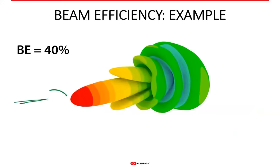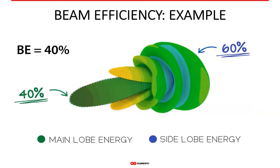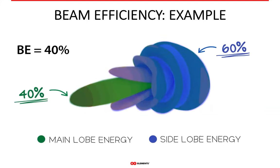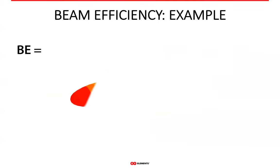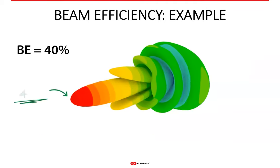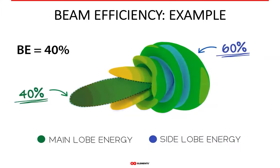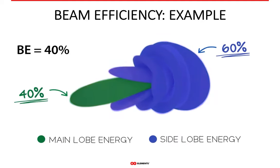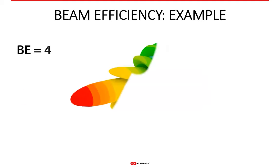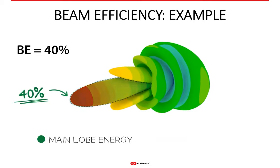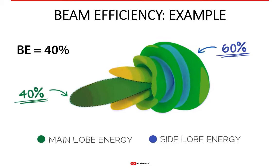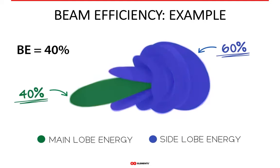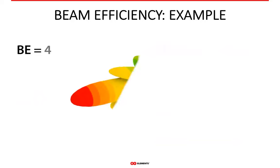To give a practical example: here you see the radiation pattern of a parabolic dish antenna. If its beam efficiency is 40%, this means that 40% of the power this antenna radiates goes into the main lobe. The remaining 60% goes everywhere else — and since everything outside the main lobe is a side lobe, it must be in the side lobes. Note that all the side lobes are highlighted here, and that's not a coincidence or a marketing gimmick. Beam efficiency really does include all the side lobes an antenna has.